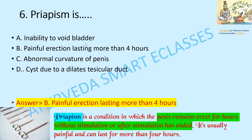Priapism: inability to void bladder, or painful erection lasting more than 4 hours, or abnormal curvature of the penis due to a dilated testicular duct? Priapism is a painful erection lasting more than 4 hours. In this condition, the penis remains erect for hours without any stimulation or after stimulation has ended. This is usually painful and can last more than 4 hours.